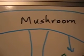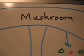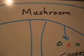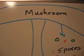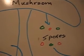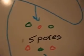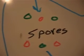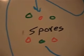Let's talk about the life cycle of the mushroom. In nature, a mushroom is a fruiting body, and it produces spores. The spores are not seeds — they're not a complete plant.